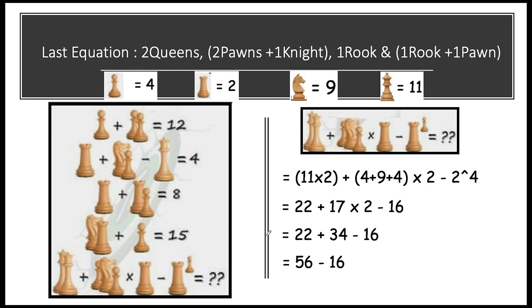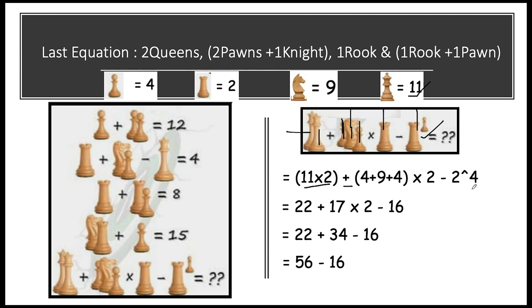Now we have all values for the final equation. The last equation has two queens, two pawns, one knight, multiplied by one rook, minus rook to the power of pawn. Substituting: (11 × 2) + (4 + 9 + 4) × 2 − 2^4, which gives 22 + (17 × 2) − 16.